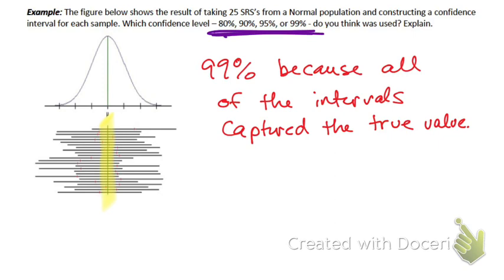Why do you think we should never say we're 100% confident? Because the very next interval might miss it. You just never know. Can we be 99.9% confident? Yes, we can. But we should never be 100% confident.